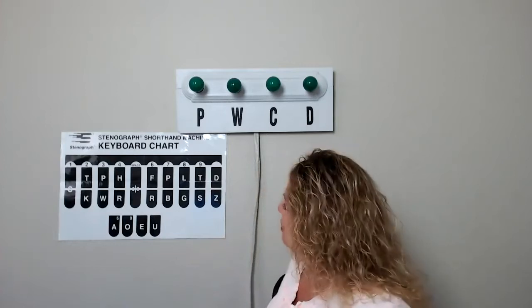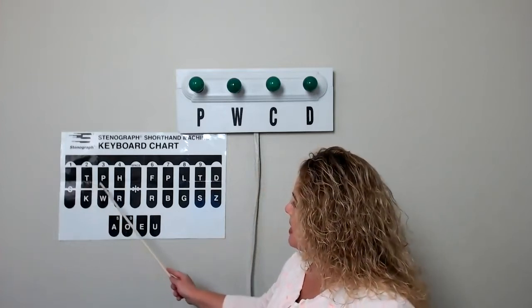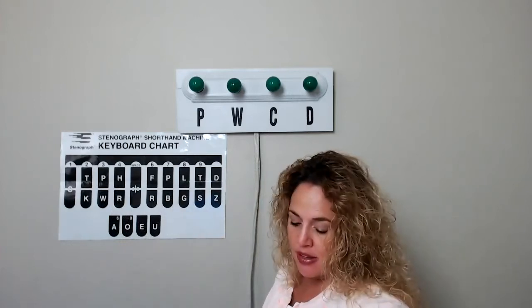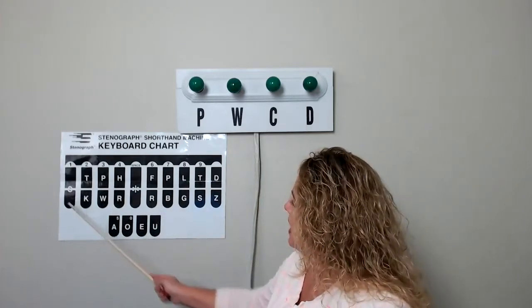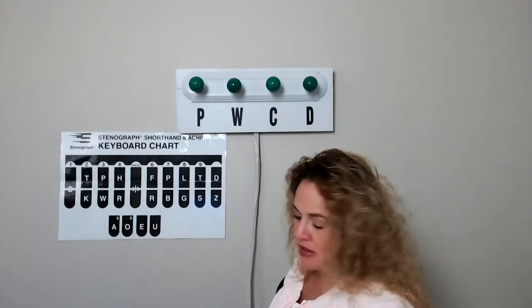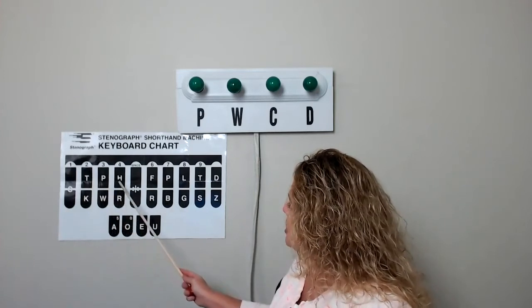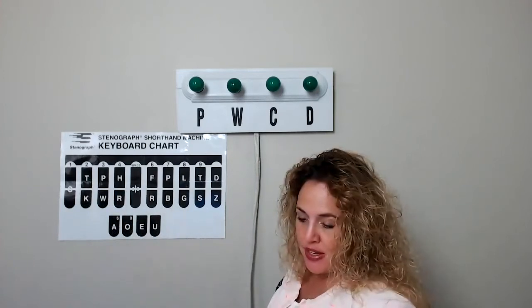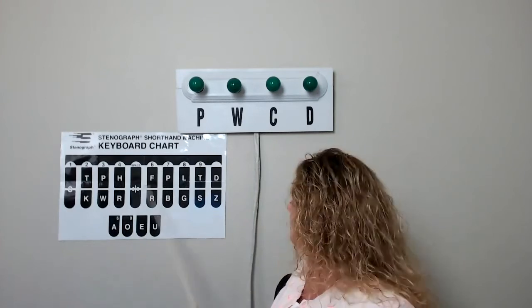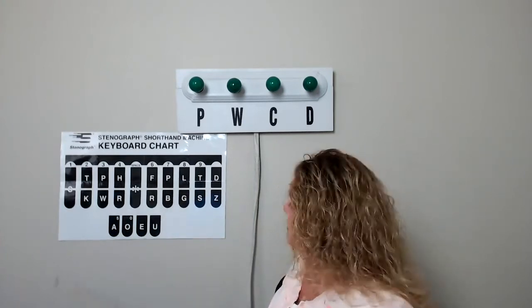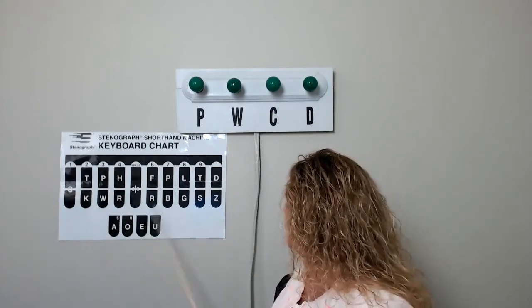All right, let's go through those and see how you did. Number one is fame — that's going to be initial F, long A, final M. Number two, soak: S, long O, final K. Number three, the brief until: initial N, final L. Number four, many: final M. Number five, speed: S, P, long E, D. If you write it with a short E, it would be sped.